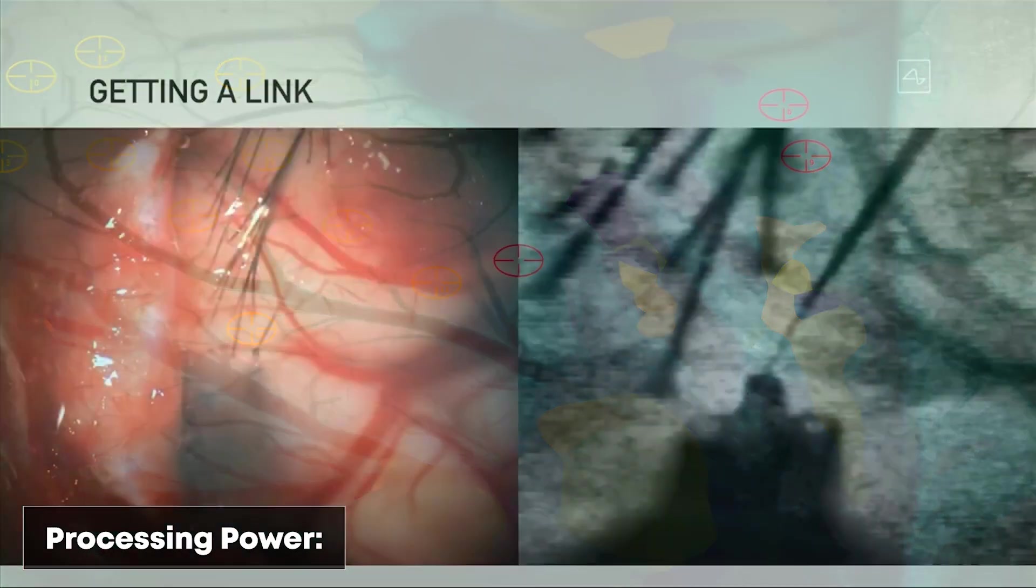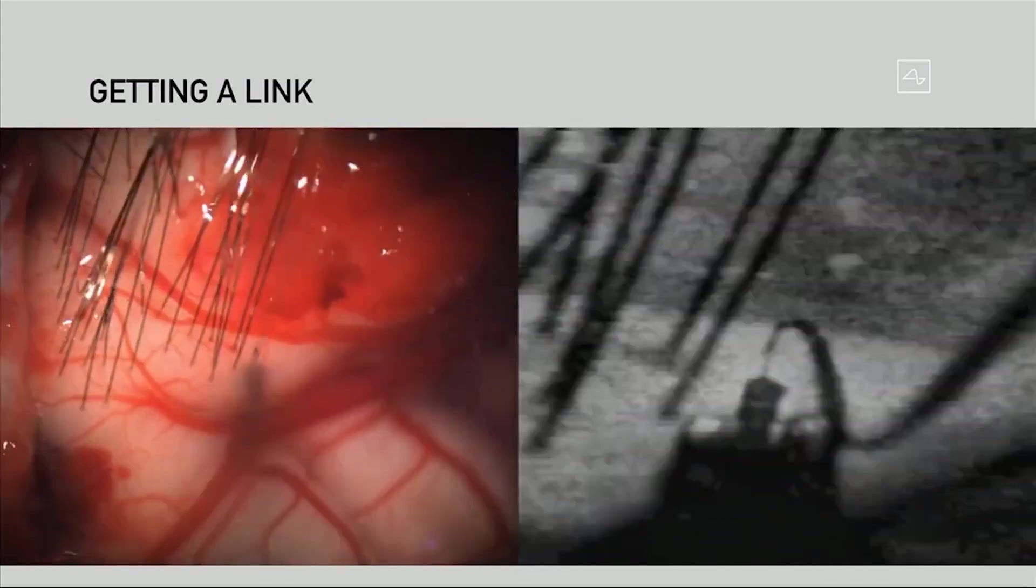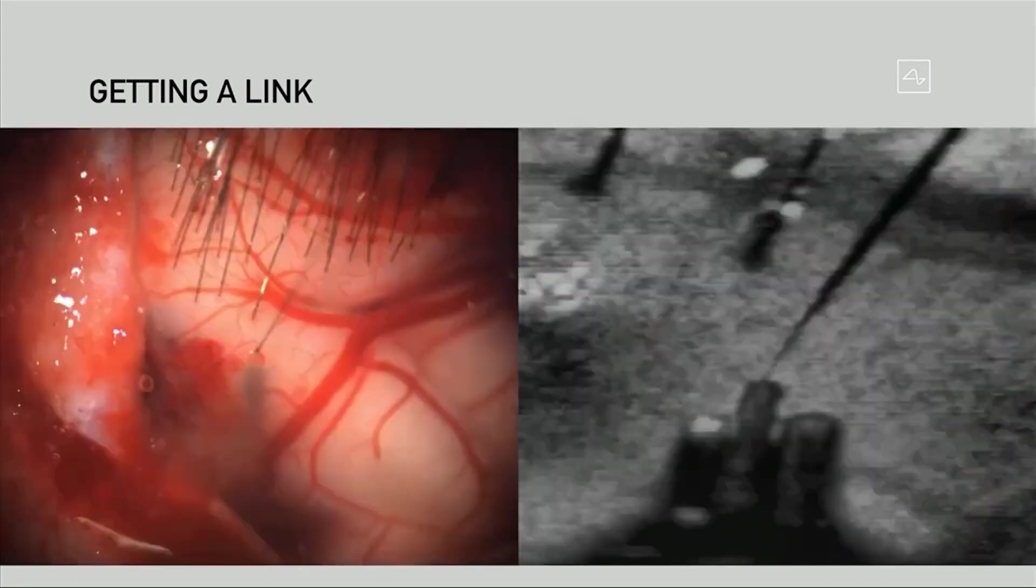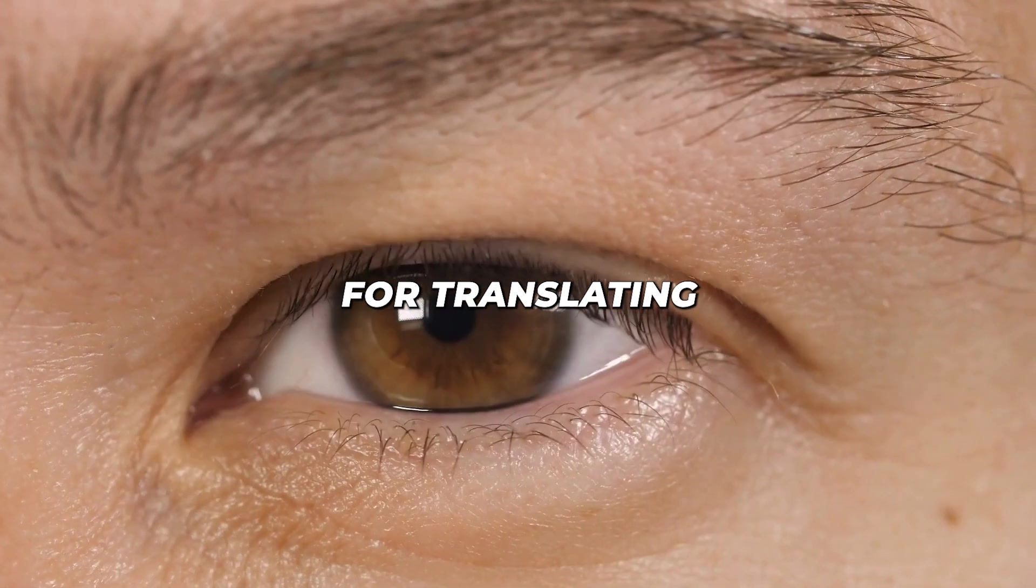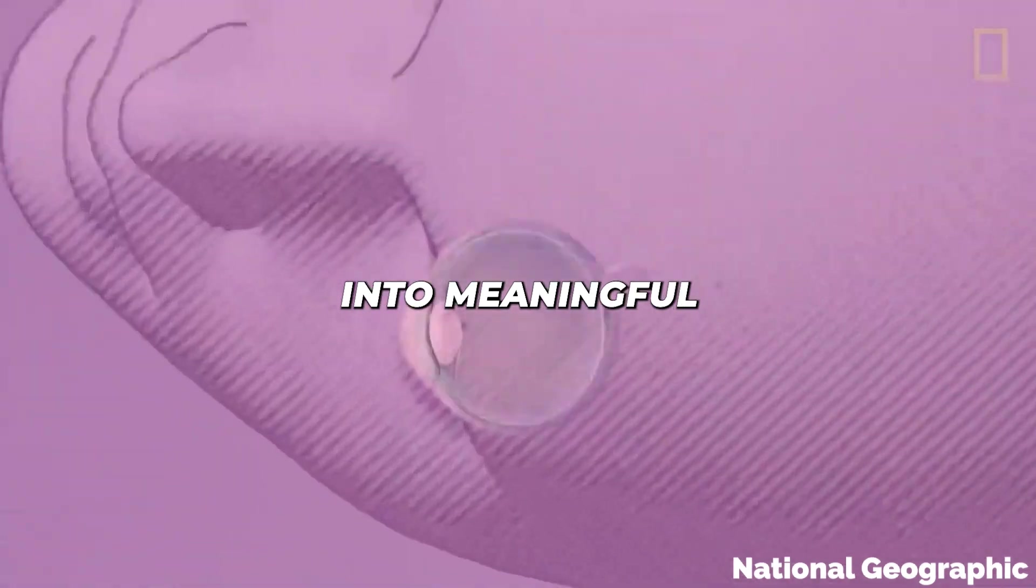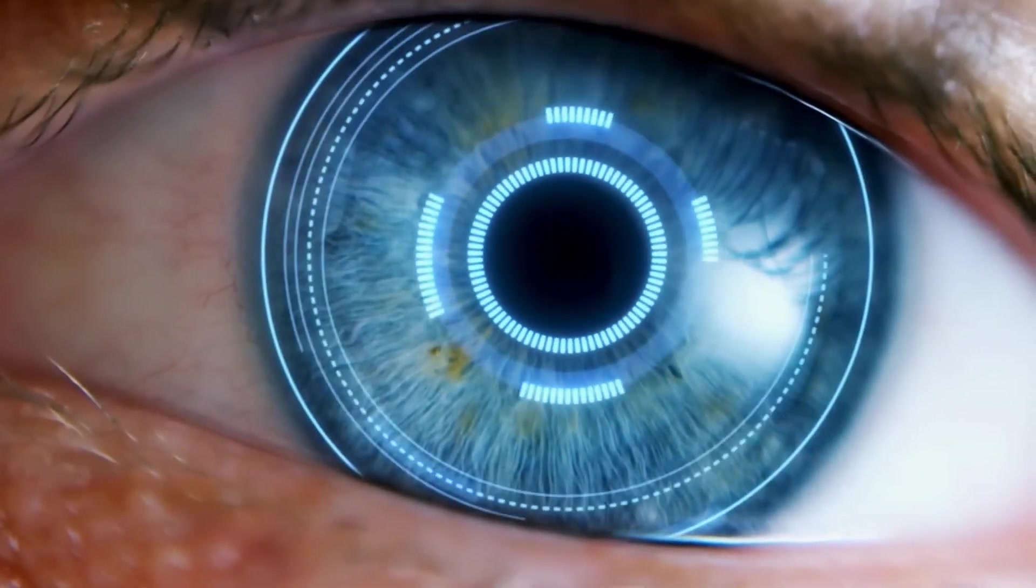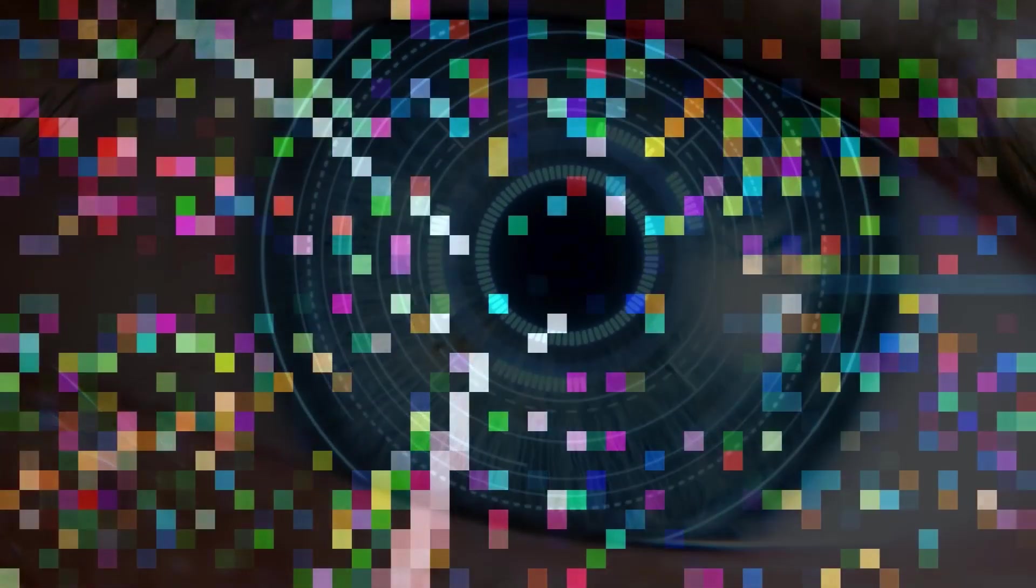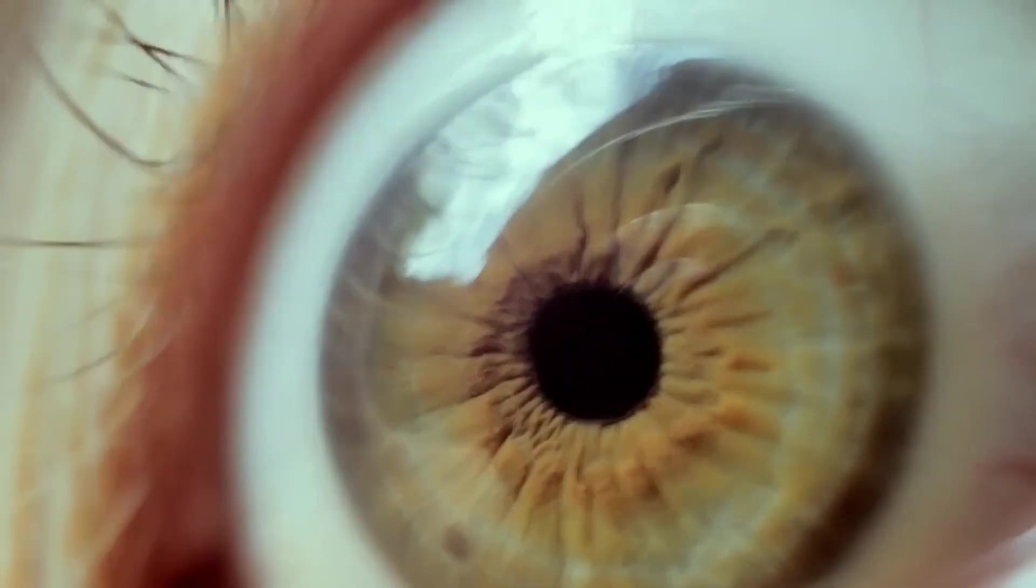Processing power: Neuralink's advanced chips are designed to handle complex visual processing tasks in real time. This onboard processing capability is essential for translating raw visual data into meaningful neural stimulation patterns. The system's ability to rapidly process and adapt to incoming visual information could significantly enhance the quality and naturalness of the perceived image.